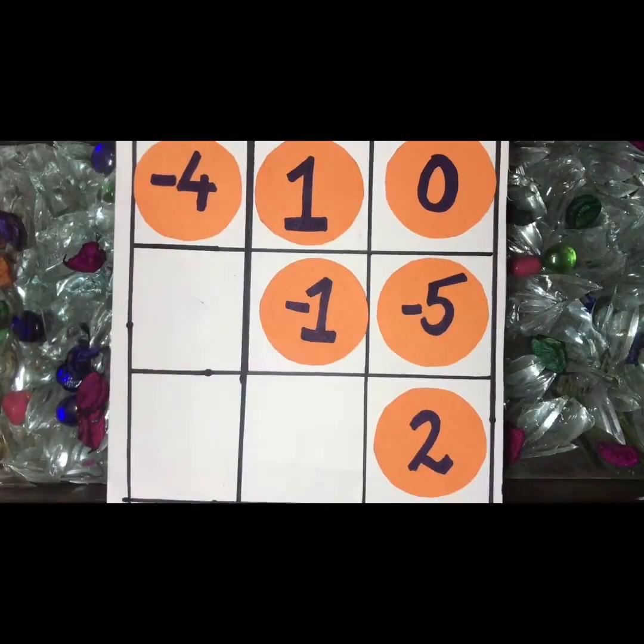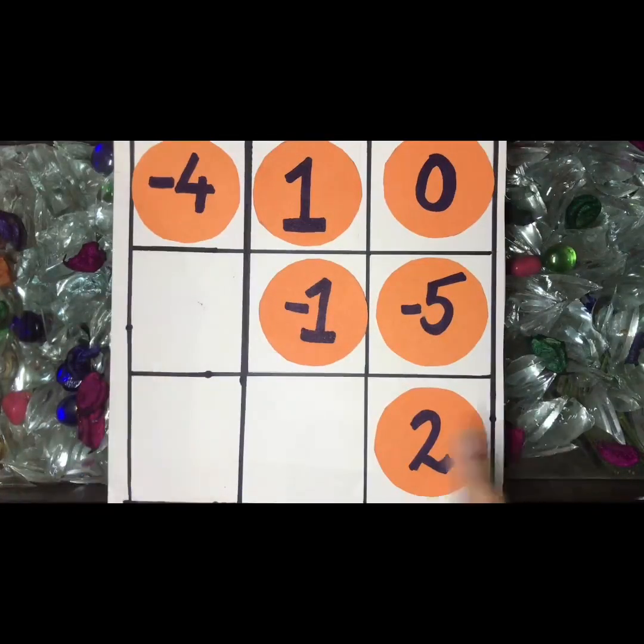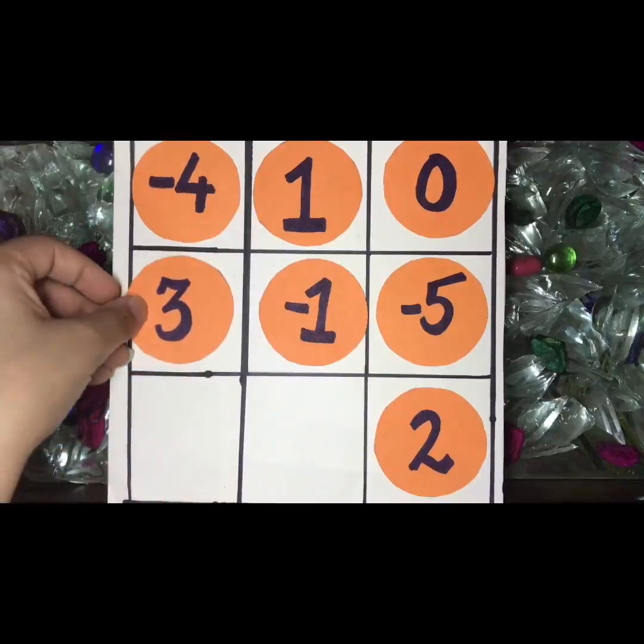Similarly, I will complete this row now. Minus 5 and minus 1, the answer is minus 6. To get the answer minus 3, I need 3. So I'll keep the 3 here.